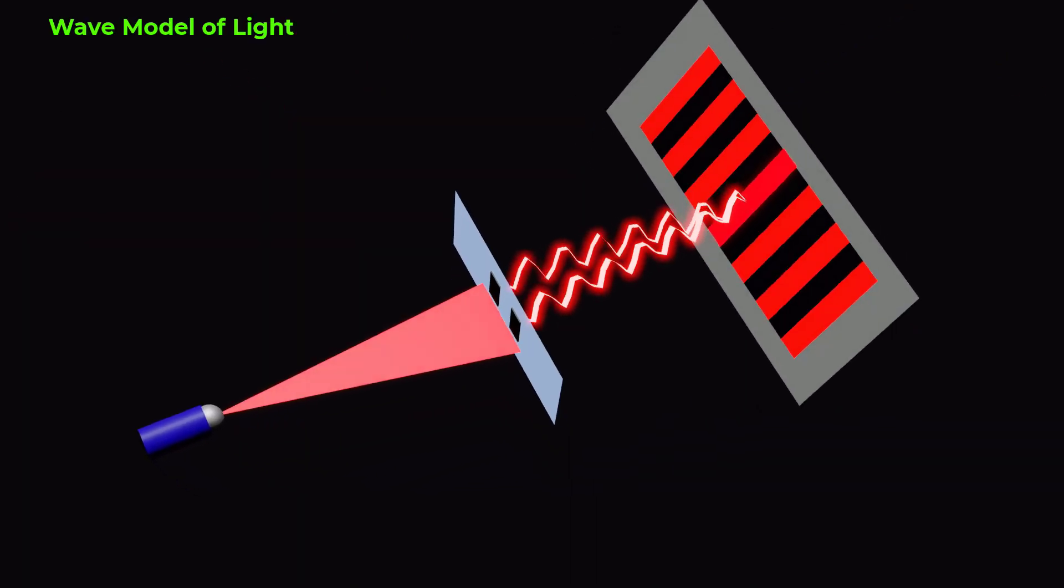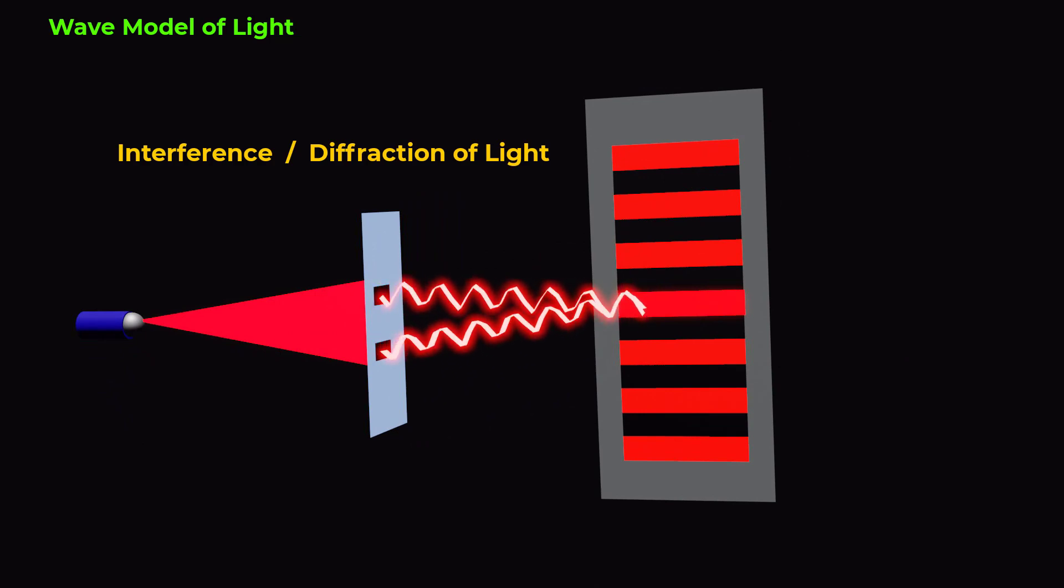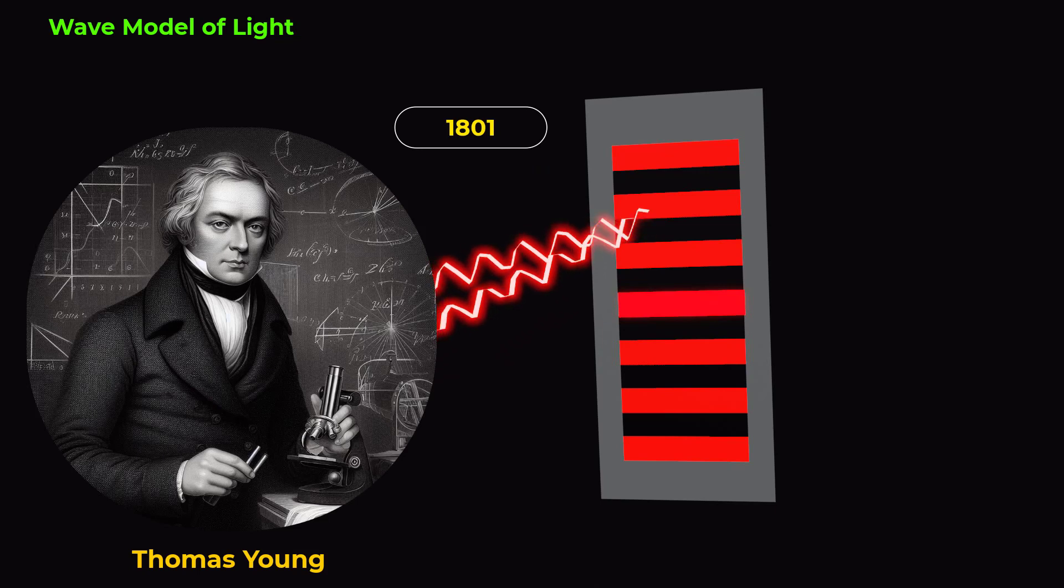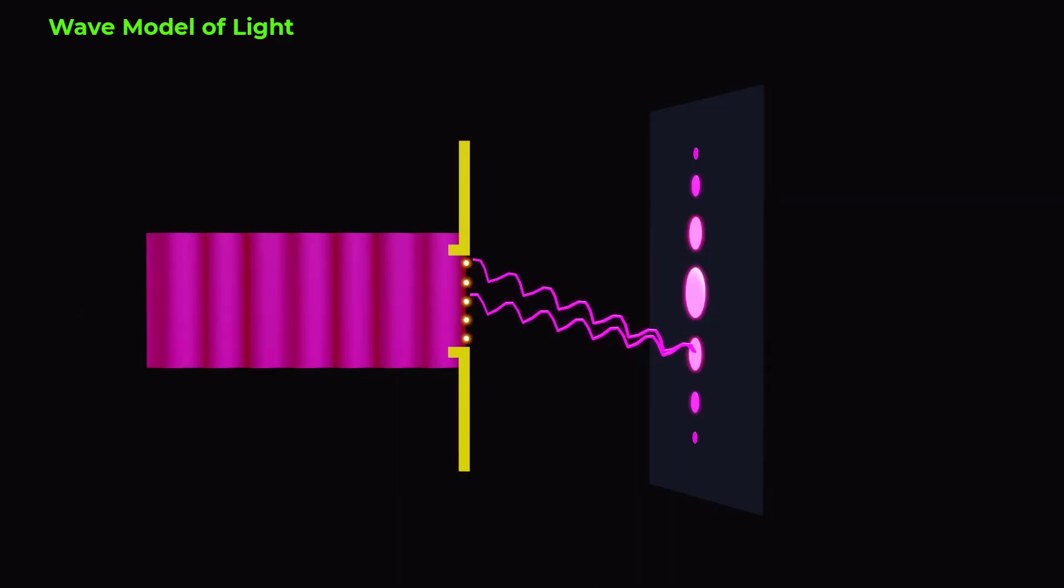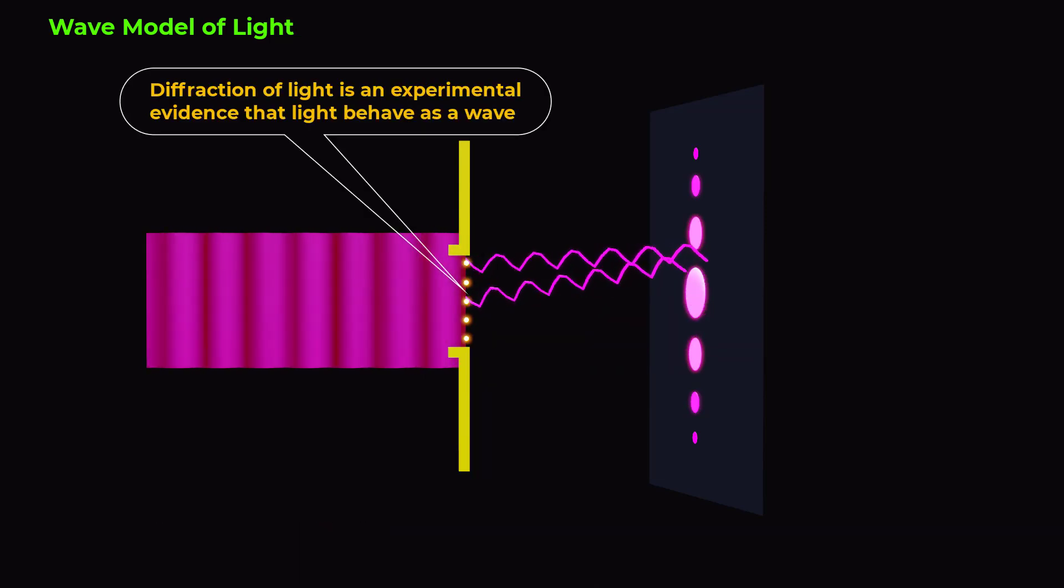The wave model of light was supported by experiments, such as the interference and diffraction of light waves. In 1801, Thomas Young performed the double slit experiment, which provided strong experimental evidence for the wave model of light by demonstrating the interference of light waves. Diffraction of light through a narrow slit or aperture is another strong experimental evidence that light behaves like waves.